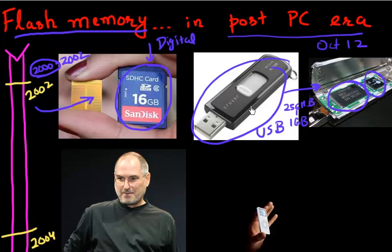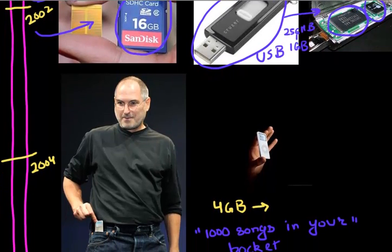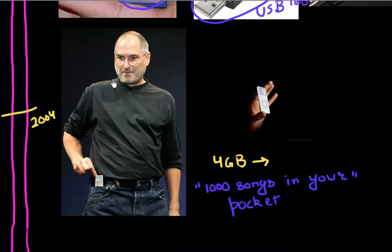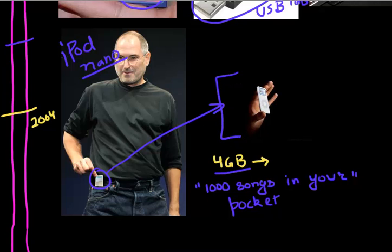The first major consumer product which drove usage of flash memory was the iPod Nano, which was the first iPod to use flash. Earlier iPods were based on hard disk drives. This iPod Nano used flash and came with four gigabytes of flash storage.